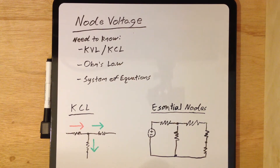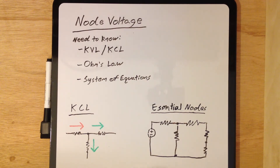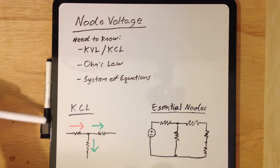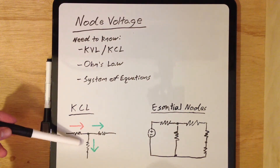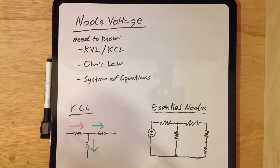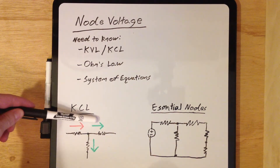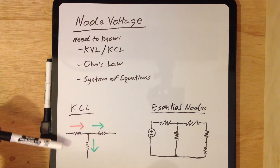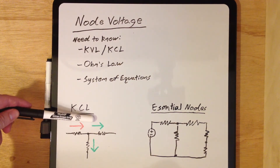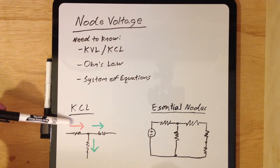Now the first thing we'll review is Kirchhoff's current law. This basically states that for every node, the amount of current going in has to equal the amount of current going out. In this case, we're using the red arrow to show a current flowing into a node, and the green arrows to show the current flowing out. If the red arrow indicates a current of, say, 3 amps, the green arrows could have 2 amps and 1 amp going out — any combination, as long as the total equals the current coming in.